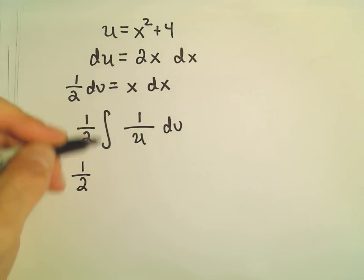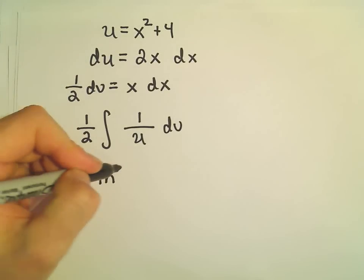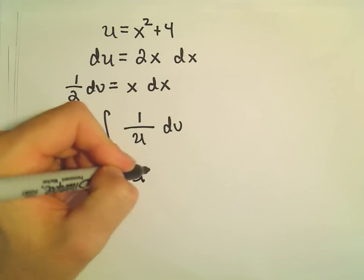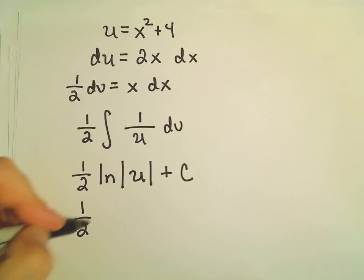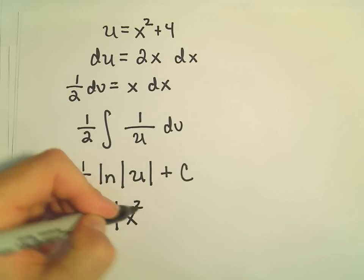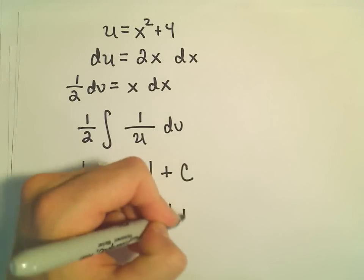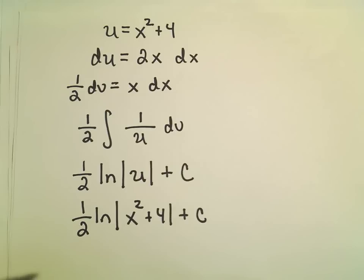So the anti-derivative of 1 over u is the natural logarithm of the absolute value of u. And now we just have to plug back in our u substitution, which was x squared plus 4. And now we have our anti-derivative.